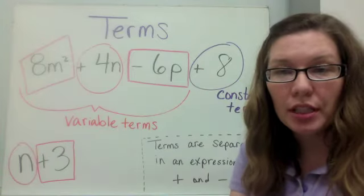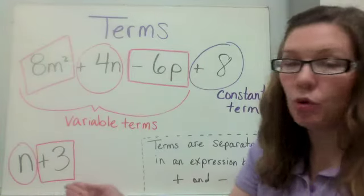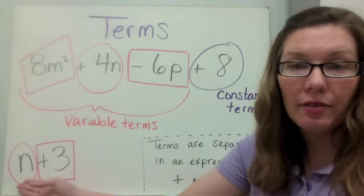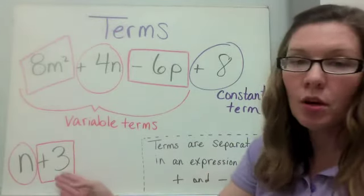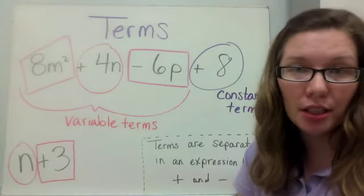Most of the expressions we're going to be using this year in sixth grade are of a more simple variety, variable plus a number. This is two terms. One is a variable term. One is a constant term.